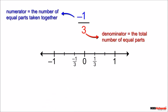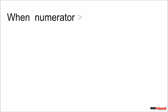Thus the first mark from 0 represents 1 upon 3. Using the same procedure we represent minus 1 upon 3 on the left side of 0, as the negative sign shows the left direction from 0.